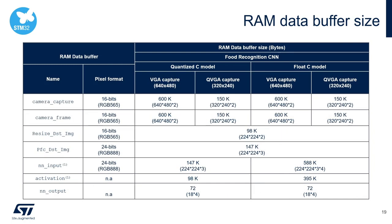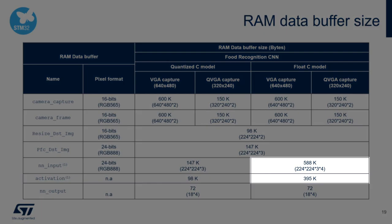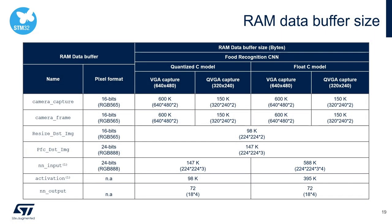This table shows the RAM data buffer size required by the food recognition application, with both float and the quantized model, and also VGA or QVGA resolution. As shown here, using VGA resolution of the camera requires more memory than using QVGA, and the float model requires more memory than the quantized model. For example, if we use the float model, we have 588 kilobytes for the NN input buffer and 395 kilobytes for the activation buffer. Please remember these numbers — we will refer to them later.